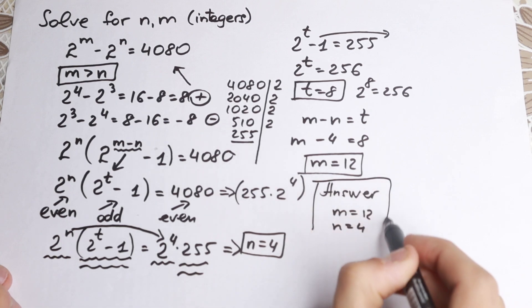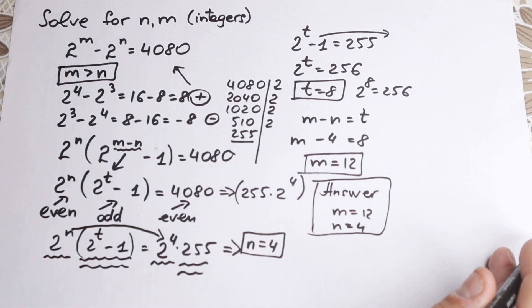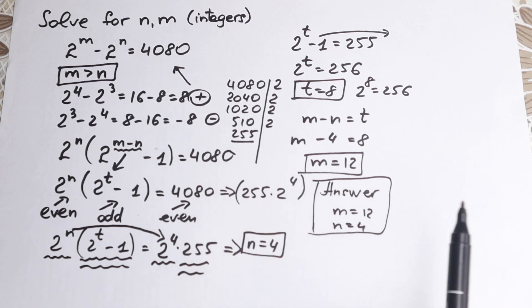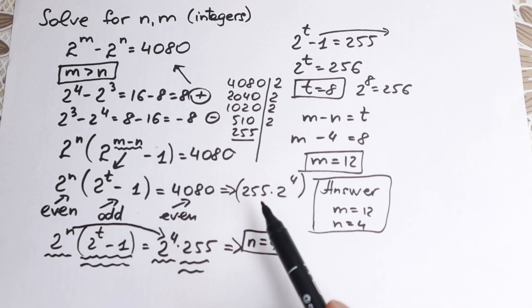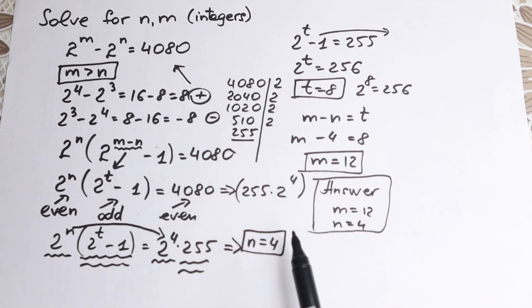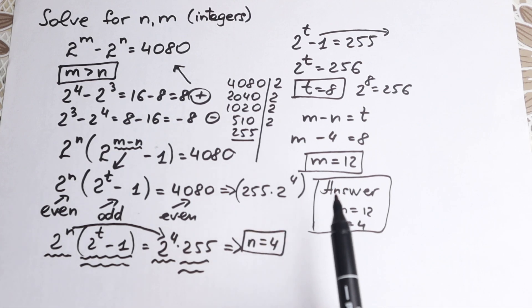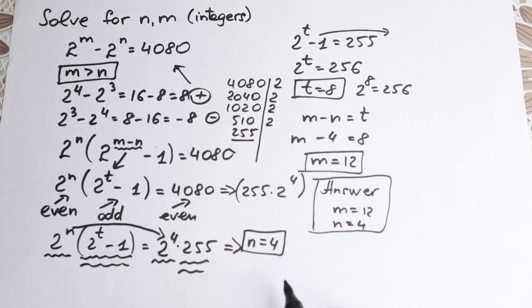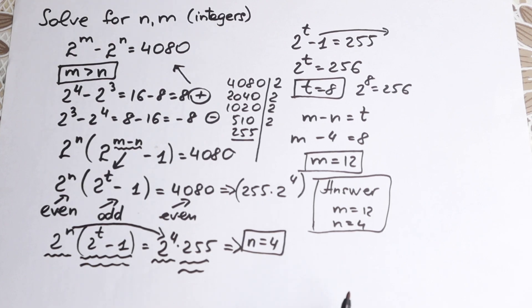Our answer is m equals 12 and n equals 4. A lot of students can solve it by inspection, but that's the main problem — you can't just write two lines saying m equals 12 and n equals 4. Every mathematician and lecturer wants a full written solution. So this is the solution. I hope you enjoyed this video. Thank you so much for watching, I really appreciate your support. Write your questions and suggestions in the comments — have a great day!